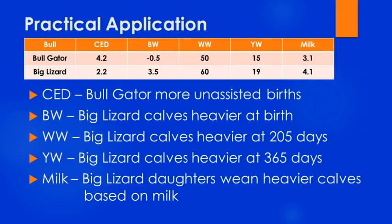Let's apply some of the principles we've been discussing. Looking at the table, you can see the five core EPDs for two fictitious bulls: Bull Gator and Big Lizard. When we look at the Calving Ease Direct EPD, we would expect heifers bred to Bull Gator to have more unassisted births than those bred to Big Lizard. Conversely, we would expect Big Lizard's calves to be heavier at birth, weaning, and yearling. For the milk EPD, Big Lizard's daughters would be expected to wean heavier calves than Bull Gator's based on milk production. These EPDs show clear differences — one bull is superior for calving ease and one is superior for growth, filling very different roles on an operation.